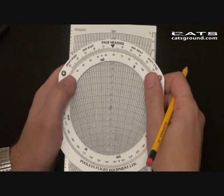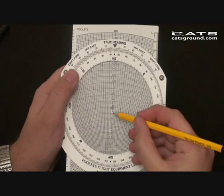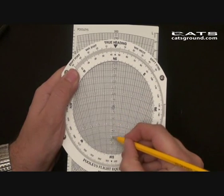Then apply the wind of 045 at 50 knots, 10, 20, 30, 40, 50, drawn down.